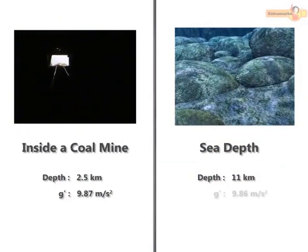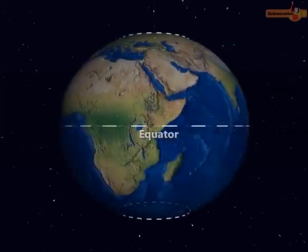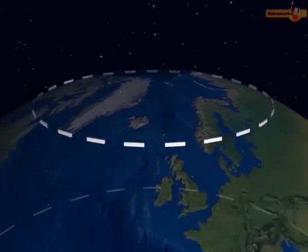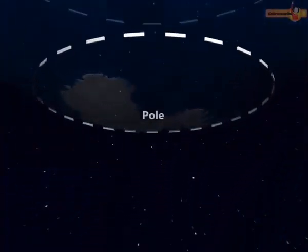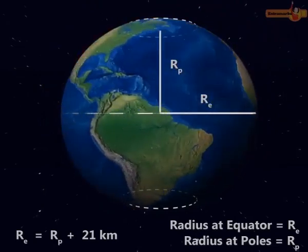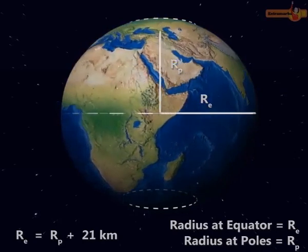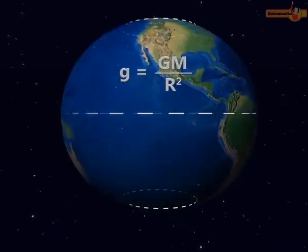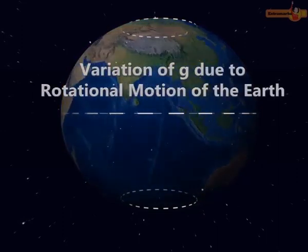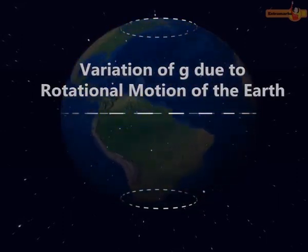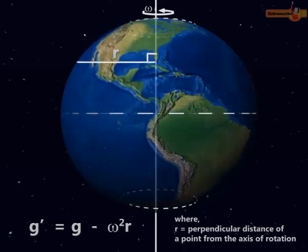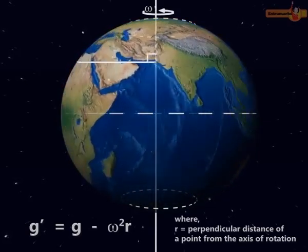The value of G increases as one moves from the equator towards the pole. This is because the earth is not a perfect sphere — it is flattened at the poles. The equatorial radius is 21 kilometre greater than the radius at the poles. Due to this difference in the radius, the value of G at the poles is greater than that at the equator. The rotational motion of the earth also affects the value of G on the earth's surface. Therefore, the value of G' varies on moving from the equator to the poles.